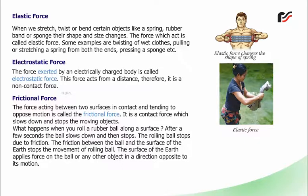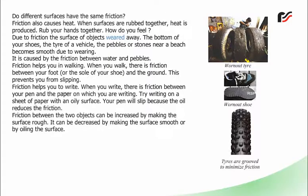Frictional force: The force acting between two surfaces in contact and tending to oppose motion is called frictional force. It is a contact force which slows down and stops the moving object. When you roll a rubber ball along a surface, after a few seconds the ball slows down and then stops. The rolling ball stops due to friction. The friction between the ball and the surface of the earth stops the movement of the rolling ball. The surface of the earth applies force on the ball in a direction opposite to its motion.